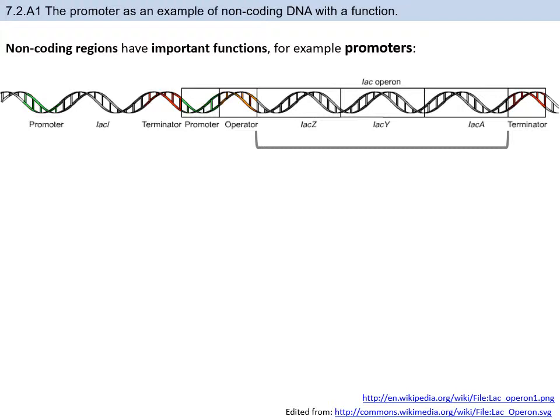If you remember introns and exons from an earlier PPT, introns are parts of the DNA that we don't need to make a protein, where exons are expressed and we need to keep. With prokaryotes, they don't have introns and exons — all they have are only exons. All of their DNA is going to be used except for the sections used for regulation.